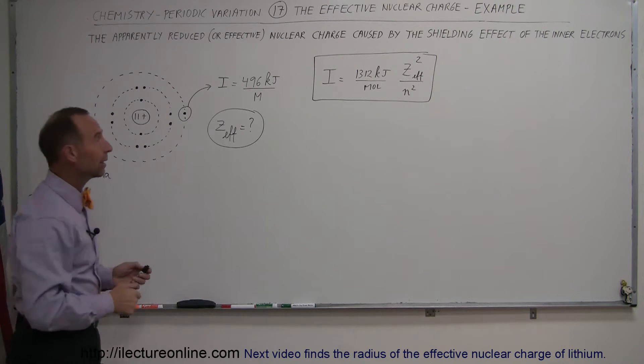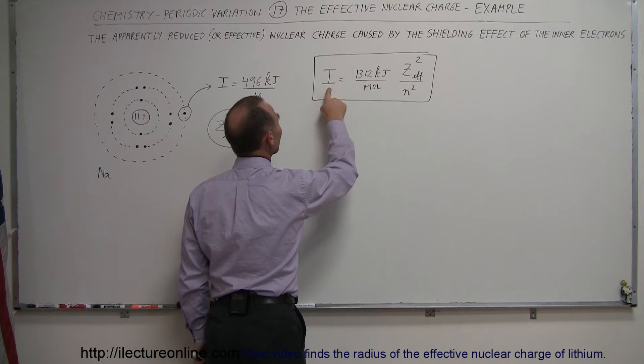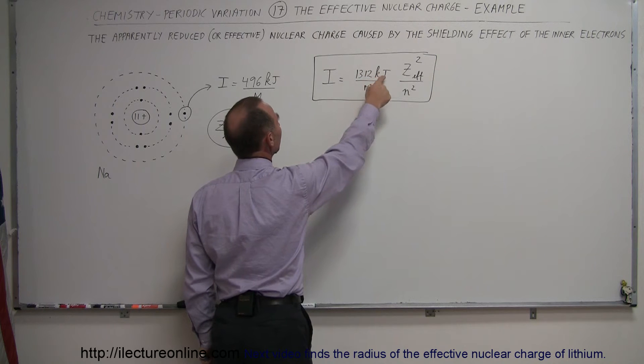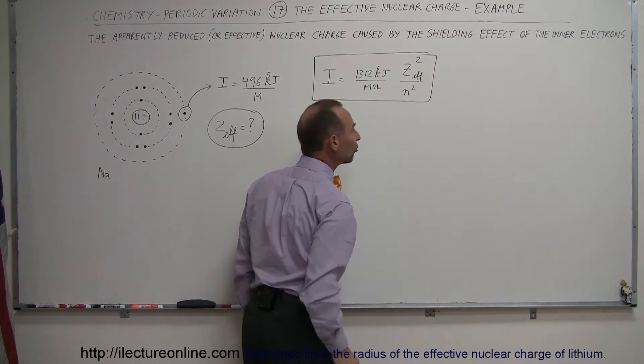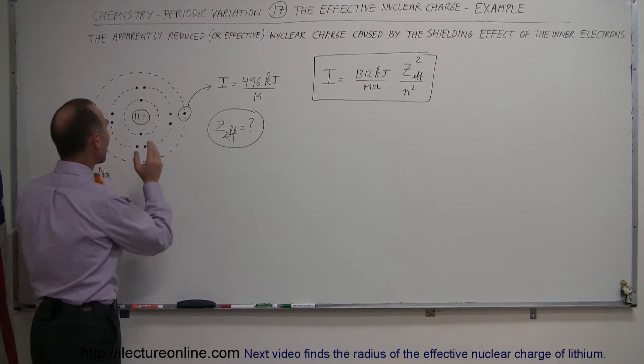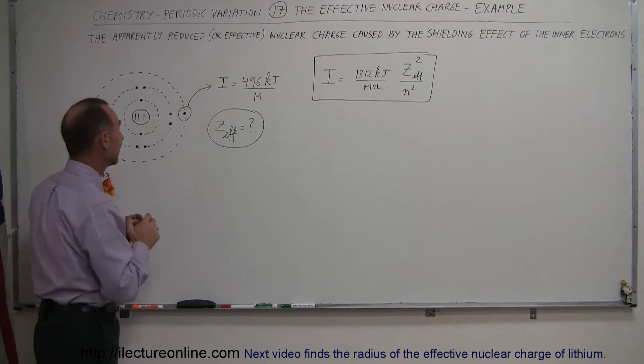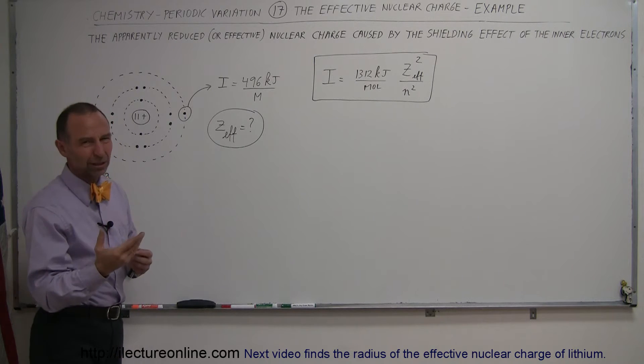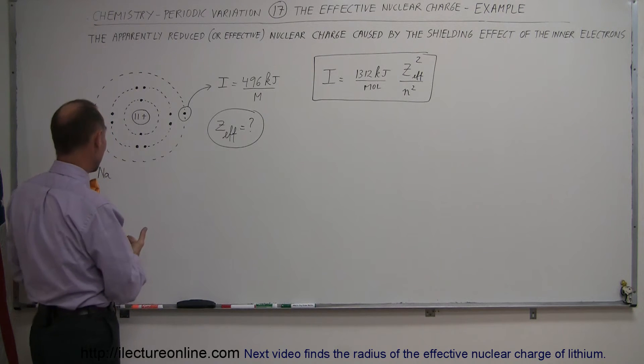Normally, we can calculate the ionization energy as being 1,312 kilojoules per mole times Z-squared over N-squared. Of course, Z-squared over N-squared is only good if there's only one electron left in the atom. When there's only one electron left, it's typically no longer an atom, it's an ion.